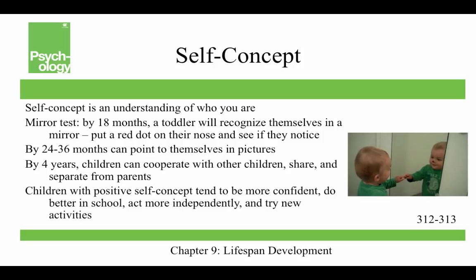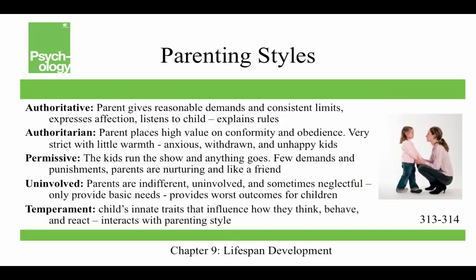Self-concept is an understanding of who you are. The mirror test involves putting a red dot on a child's nose to see if they recognize themselves. By 18 months, a toddler can recognize themselves in a mirror — prior to that, they think the reflection is just another baby. By 24 to 36 months, children can point to themselves in pictures, and by four years they can cooperate with other children, share, and be separate from their parents. Children with positive self-concepts tend to be more confident, do better in school, act more independently, and are willing to try new activities.